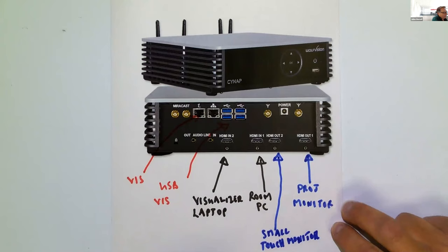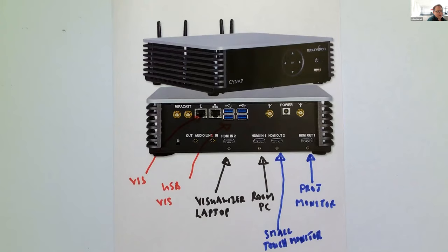The Cynap offers peripheral commands in its settings, so by connecting a small touch monitor to the HDMI output, you can create your own mini room management system. Place it on a lectern or table, and through peripheral commands you can assign PJLink to activate the projector and monitor — switching them on and off — and also use WolfProp commands to operate the visualizer and control all the devices in the room.